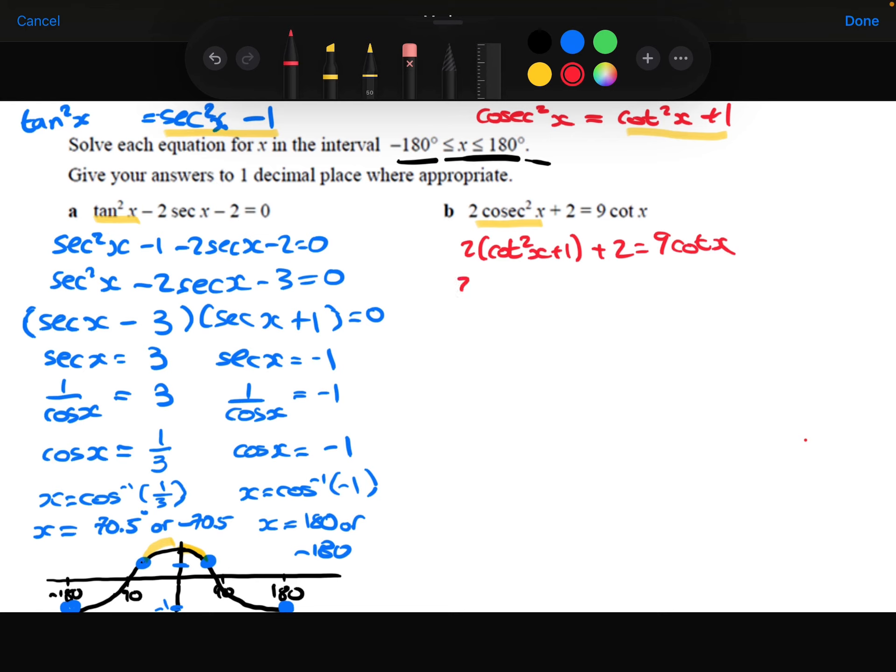Expand the brackets. Collect up the like terms, and I'm also going to subtract the 9 cot x from both sides so that it equals 0. Factorize, if we can, and I think we can here.